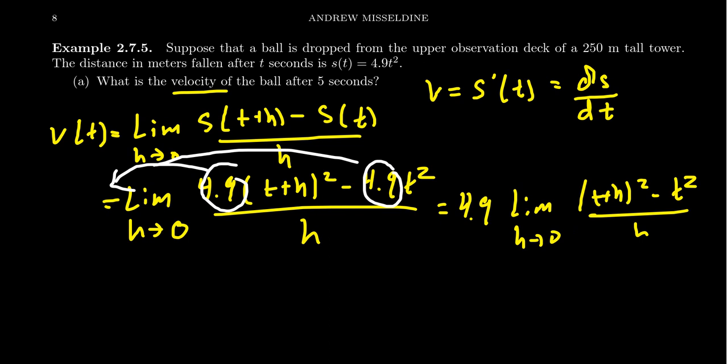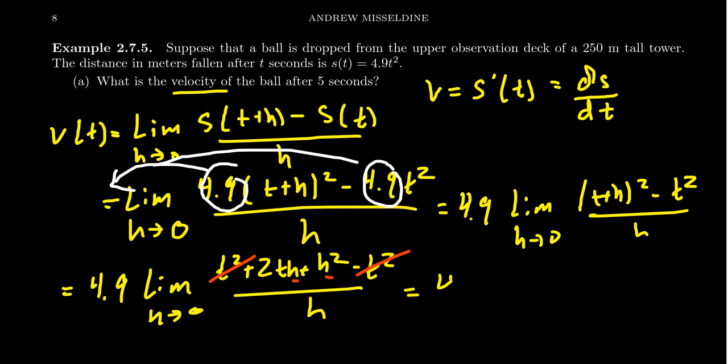And so then we can proceed to do this. We can FOIL this thing out. We get 4.9 times the limit - well, what's (t+h)²? You're going to get t² plus 2th plus h² minus t² over h as h goes to 0. You'll notice that t² cancels out with the negative t². Those things that didn't cancel out have a factor of h in them, so let's factor out that h. So we get h times (2t + h) all over h, as h is going to 0. We have a factor of h in the numerator, a factor of h in the denominator. They will cancel out.